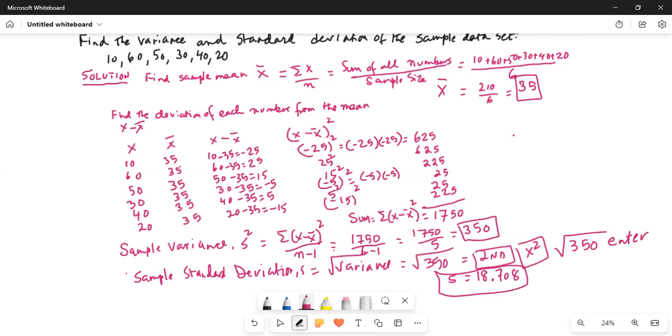So either way, you can do the problem. I show you how to use the formula and calculate it, or you can use the calculator if you are more comfortable using the calculator. I will stop by today. So let me stop and summarize what I did. First, I found the sample mean by adding all the numbers, dividing by the sample size.